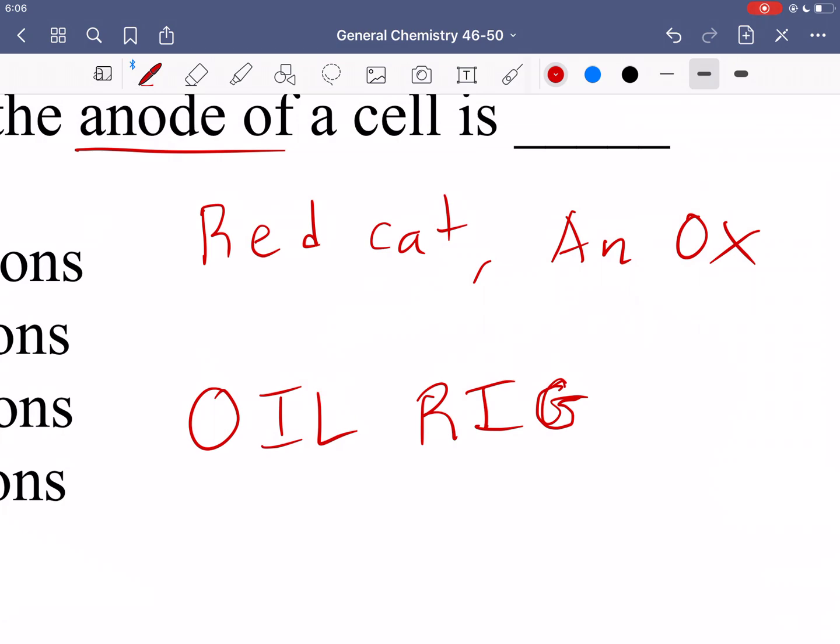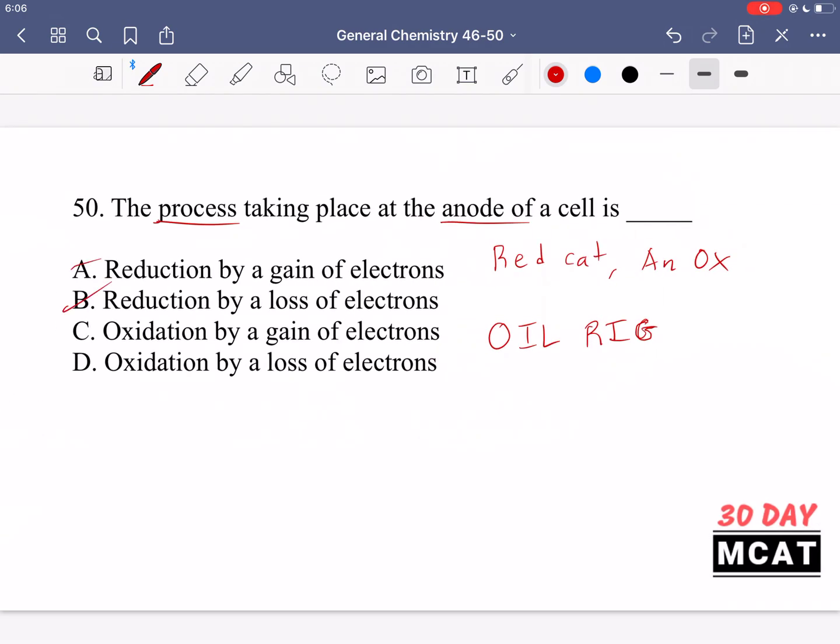Red cat that part means at the cathode there's a reduction taking place. That's the type of reaction. At the anode, and that's what we're talking about in this question, ox is telling us there's an oxidation reaction taking place. So we eliminate A and B, it's not a reduction, it's an oxidation. And then is an oxidation a gain or loss of electrons?